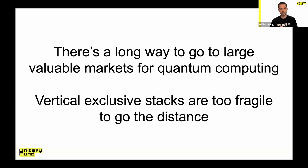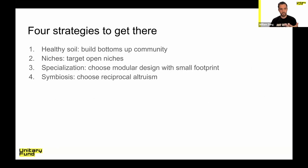There are things that are going to get invented. Variational programming is relatively new — that was a big shift. There's going to be something like that that happens; it might be related to how we do quantum error correction. We should be open and not surprised if the APIs and intermediate representations we have today end up getting thrown out in a couple of years for very good reasons. So in order to build things that last, I think you need to build as if you're building something in a jungle. The four strategies: healthy soil, targeting niches, specializing in them, and advocating for symbiosis.